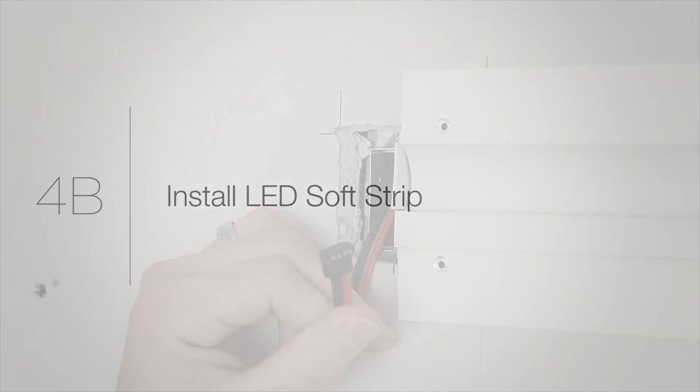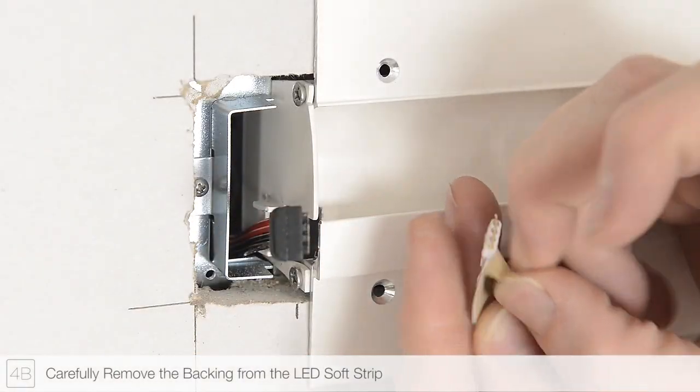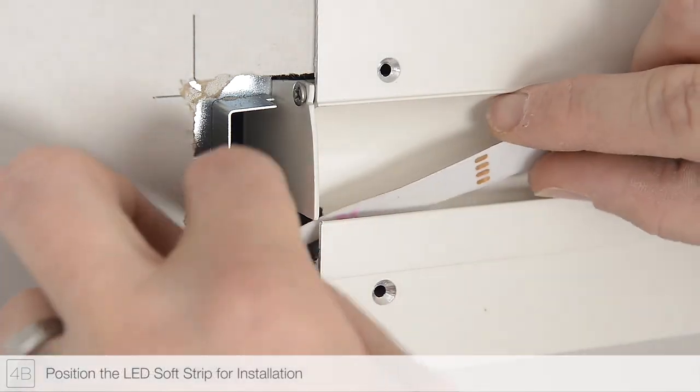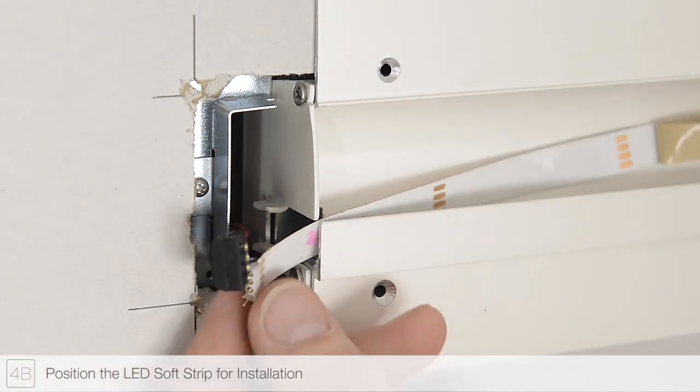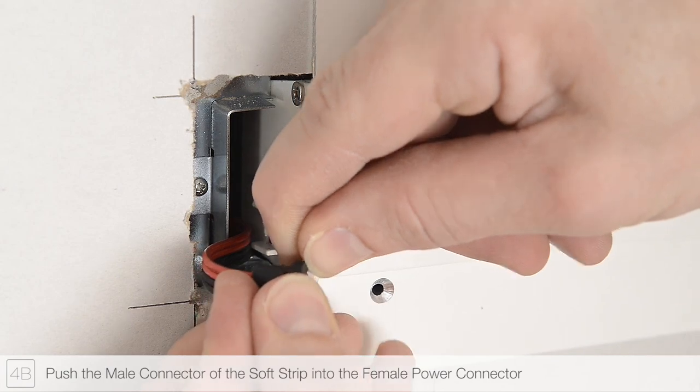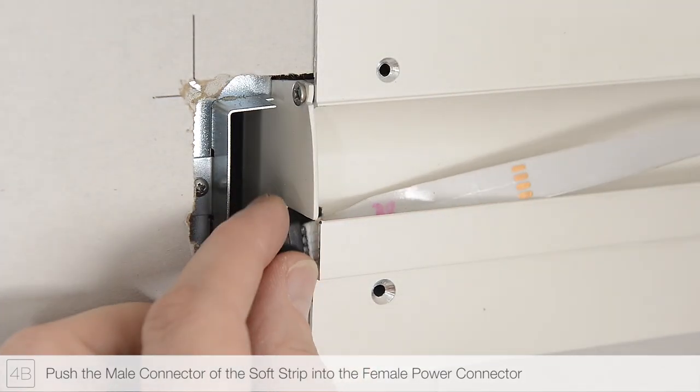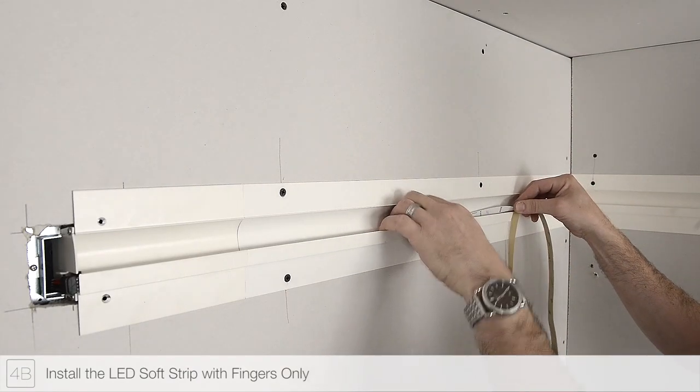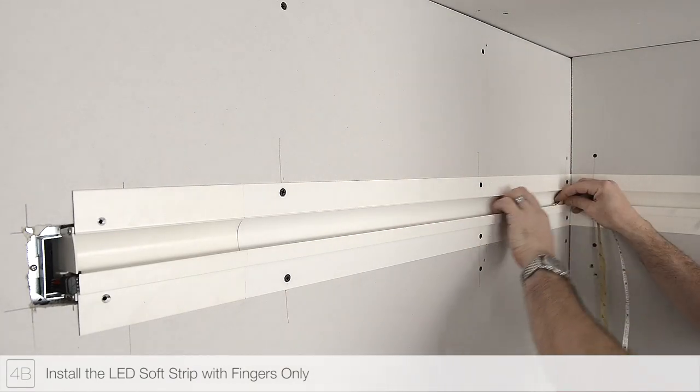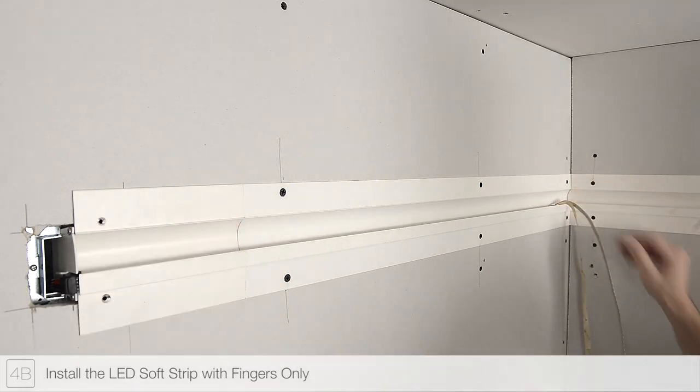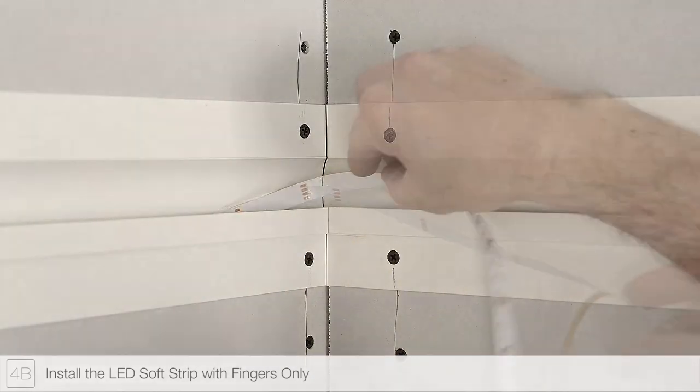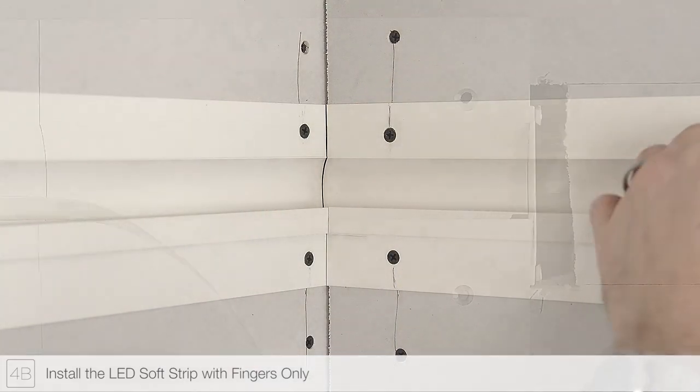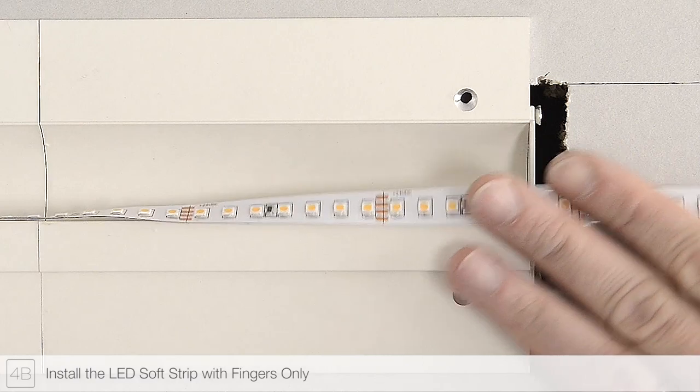Step 4B: Begin installing the LEDs by removing a small section of the paper backing from the strip. Insert the power header into the flexible power connector. Gently press the adhesive backing of the soft strip into the channel while continuing to remove the paper backing. It is important when installing the soft strip no tools or hard instruments are used that may cause damage. Wrap strip around corners to ensure continuous illumination. Only use fingers to install the strip.